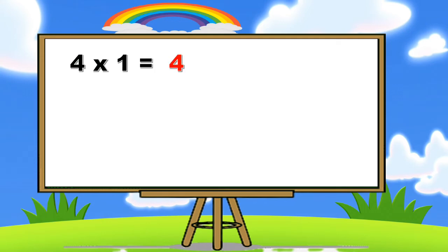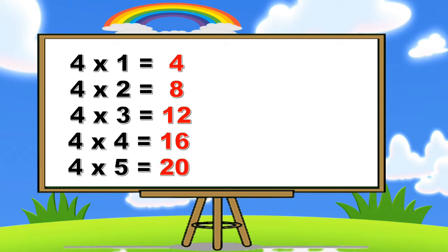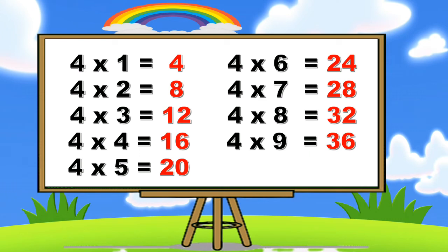Four ones are four. Four twos are eight. Four threes are twelve. Four fours are sixteen. Four sixes are twenty-four. Four sevens are twenty-eight. Four eights are thirty-two. Four nines are thirty-six. Four tens are forty.